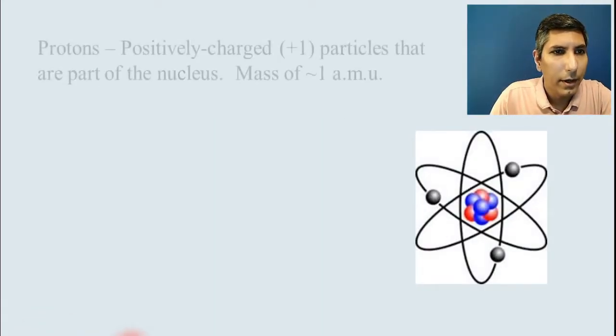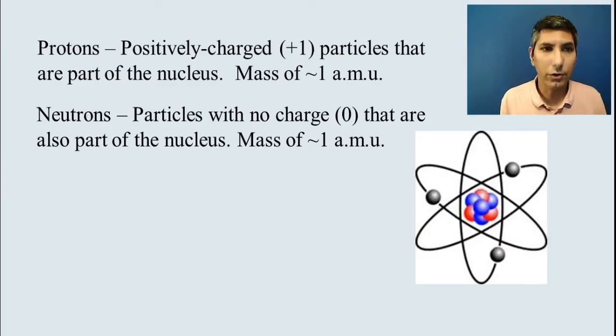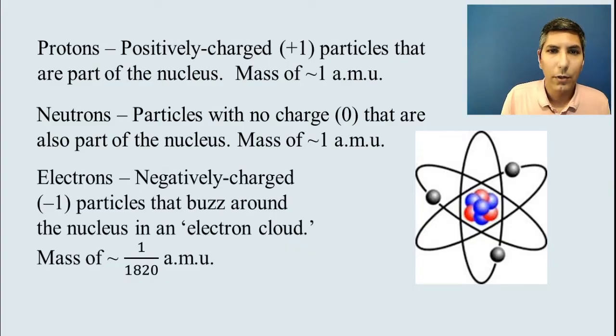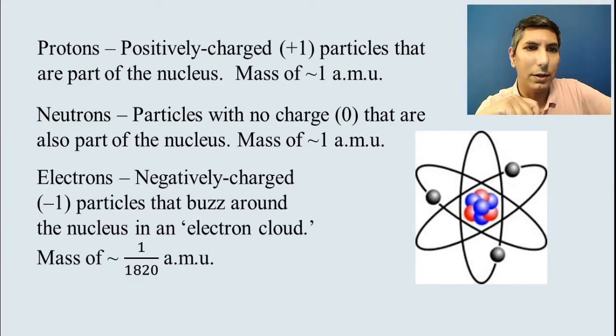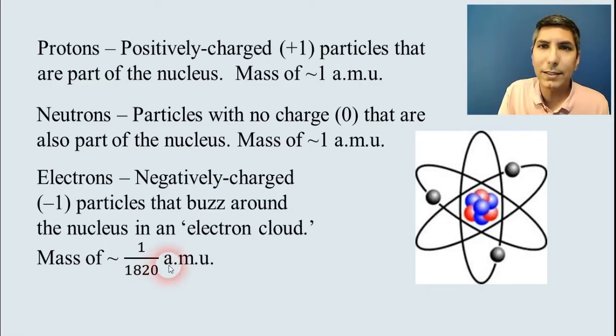Now today, we know that atoms are composed of protons in the nucleus. Those are the positively charged particles. Those have a mass of about one atomic mass unit. And then we have neutrons. Like we said, those don't have any charge. Those are neutral. And so that's why they're called neutrons, because they're neutral. And they also have a mass of about one atomic mass unit. And then we have the electrons. Those are much, much smaller than protons and neutrons. And they're buzzing around the nucleus in what we sometimes call the electron cloud. Now you can see how much smaller and how much less massive they are than protons and neutrons. About 1,820th of the mass of those particles in the nucleus.